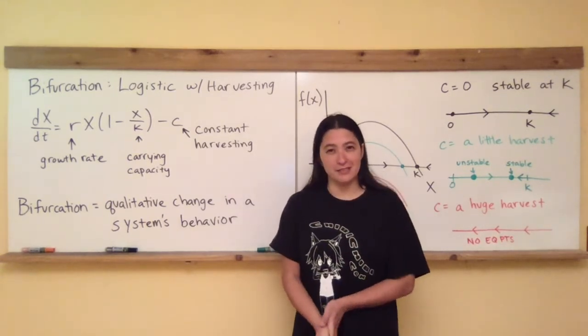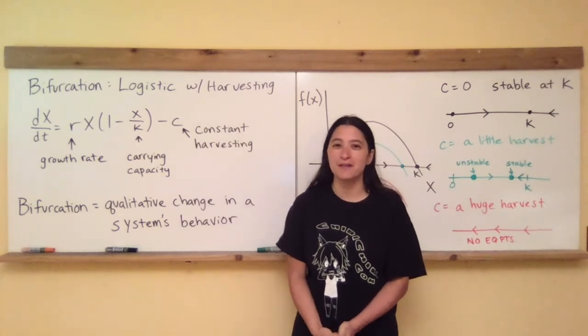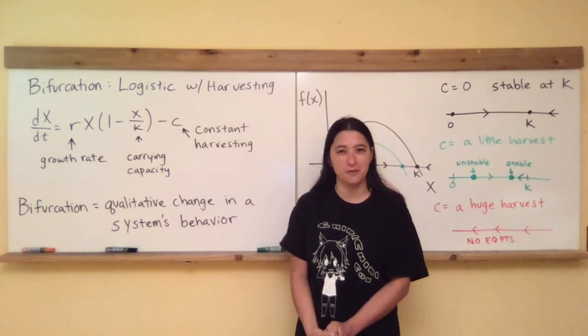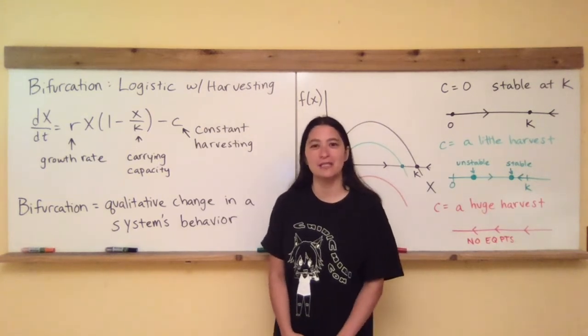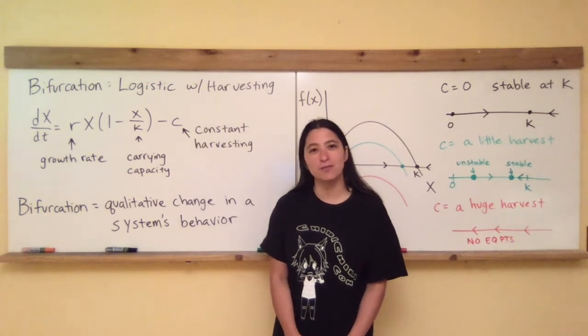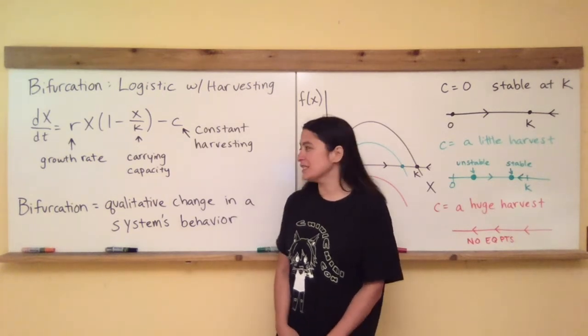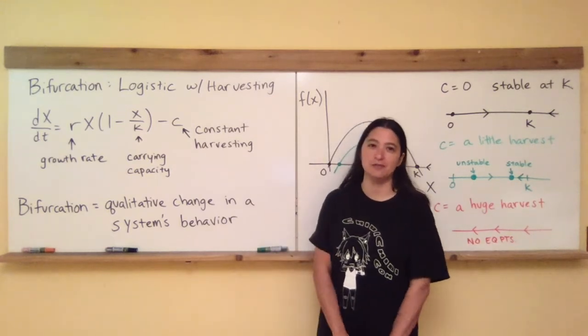Now we're going to start our journey towards bifurcation theory, and probably a very first step in that is explaining the word. You can go ahead and look up the word in a dictionary, but in mathematics, when we refer to bifurcation, what we're trying to say is that there's some sort of qualitative change in a system's behavior.